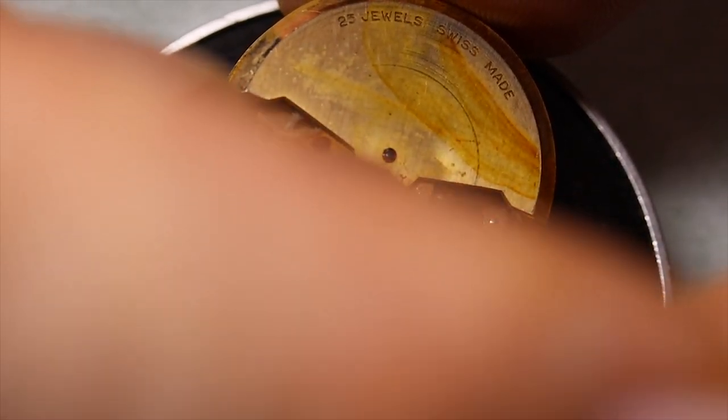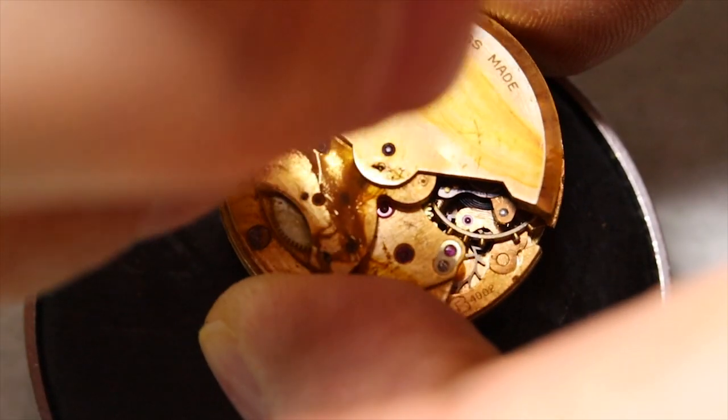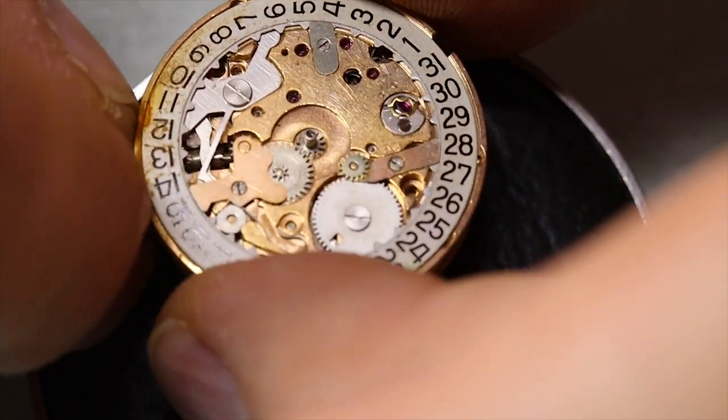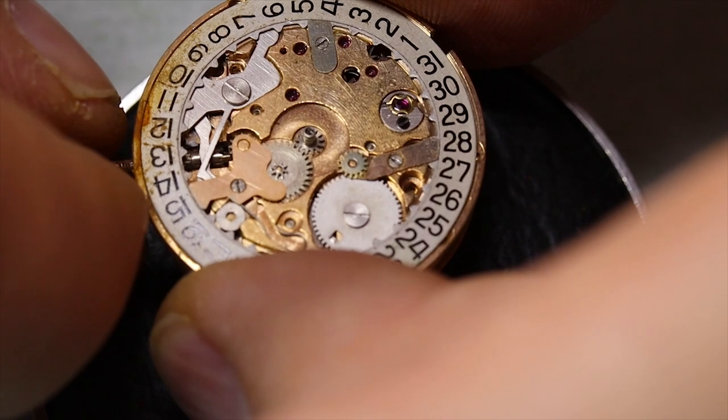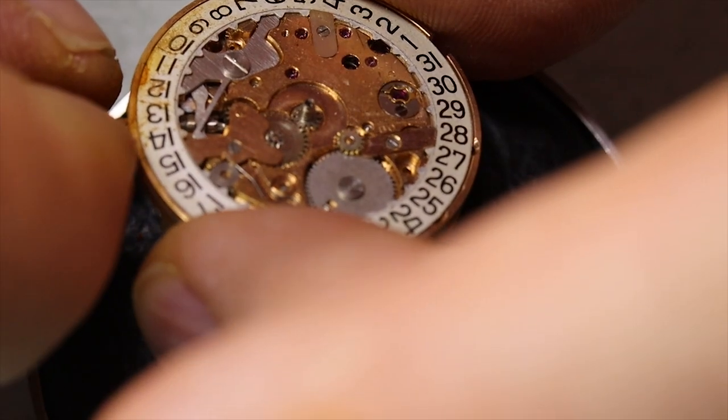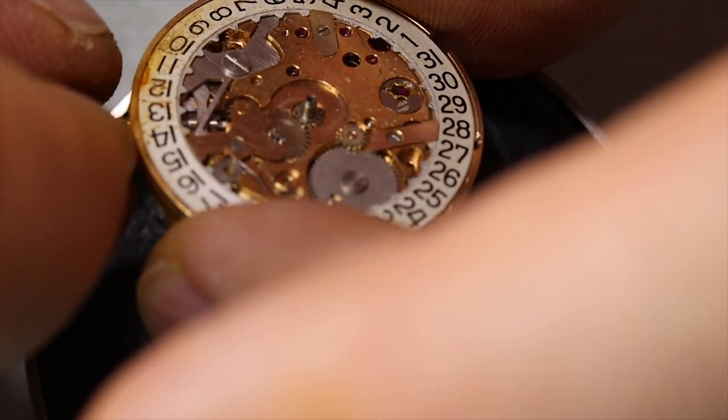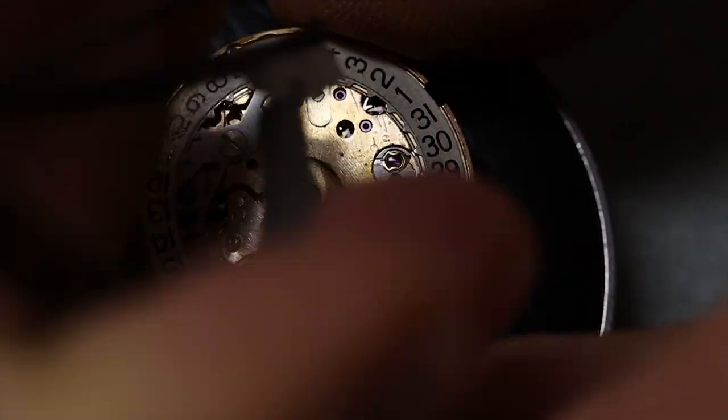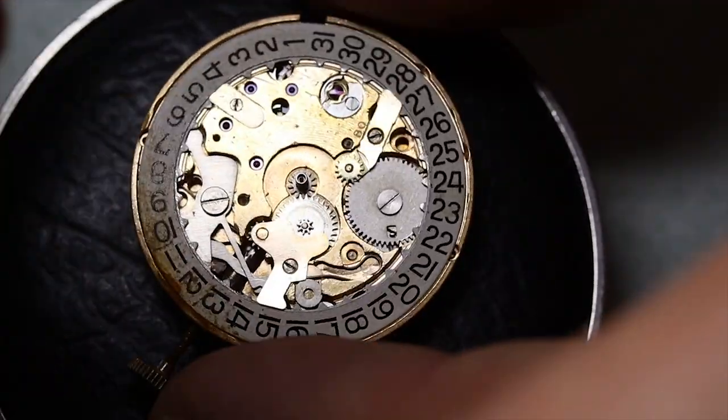And then we can put the crown and the stem back in. Not sure there's any point because nothing seemed to move too much. We see we can actually operate the crown in time setting mode, but still not in the winding mode.